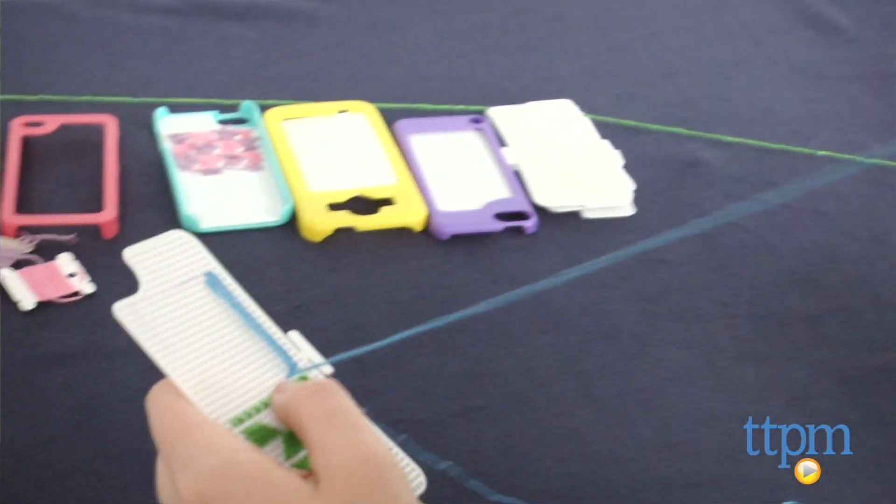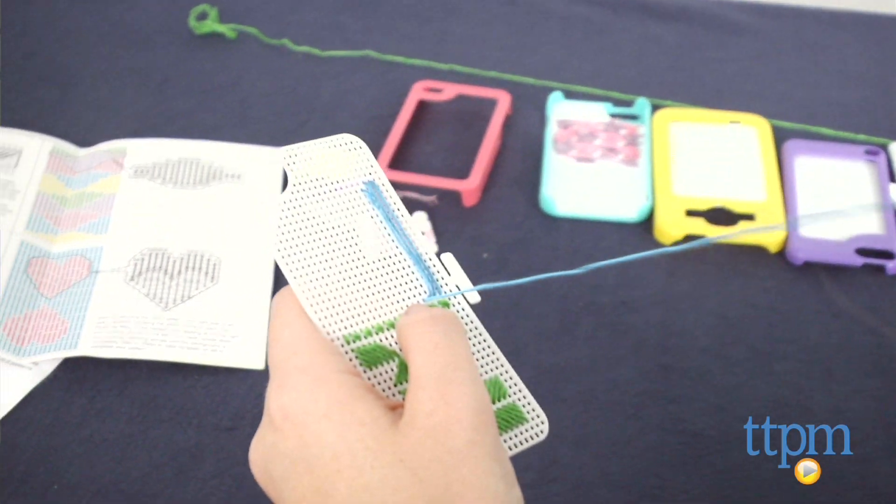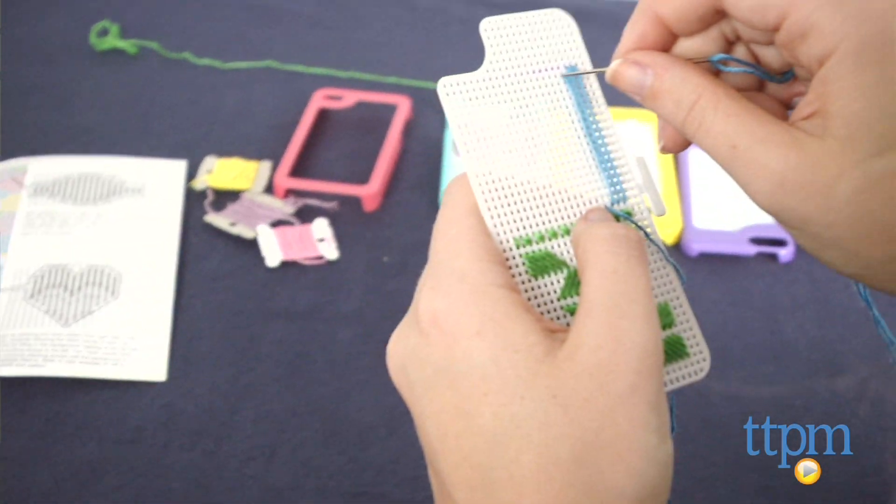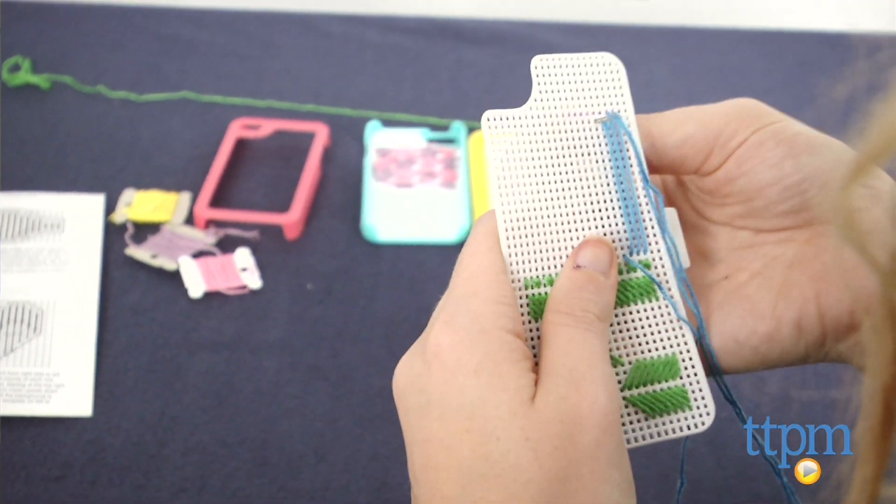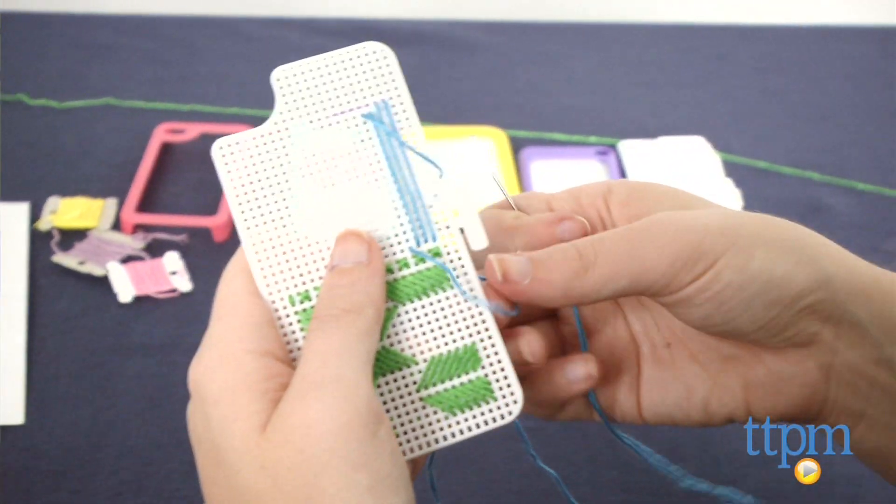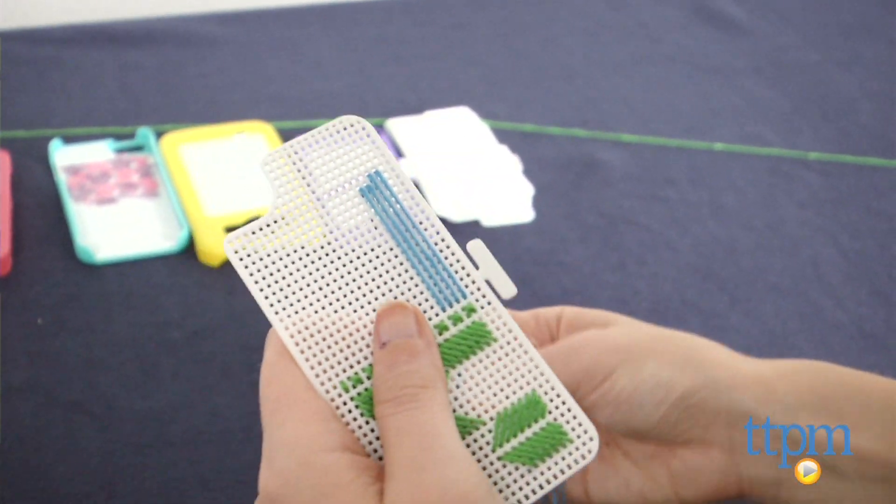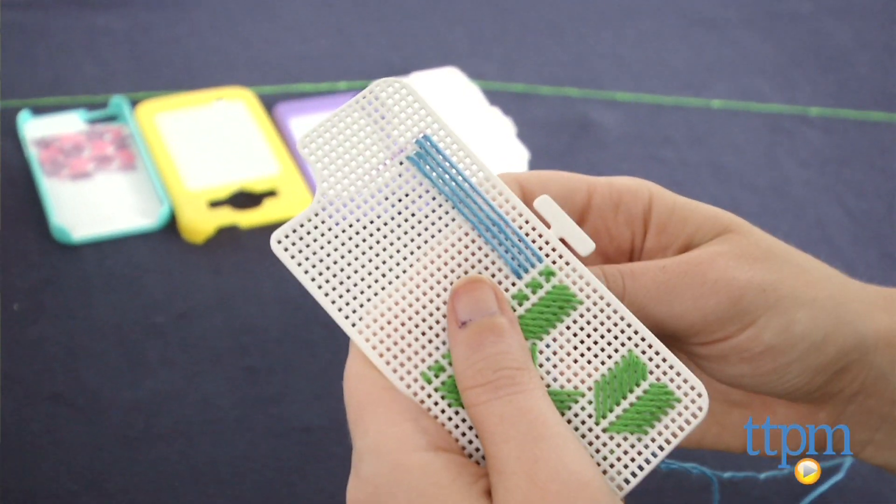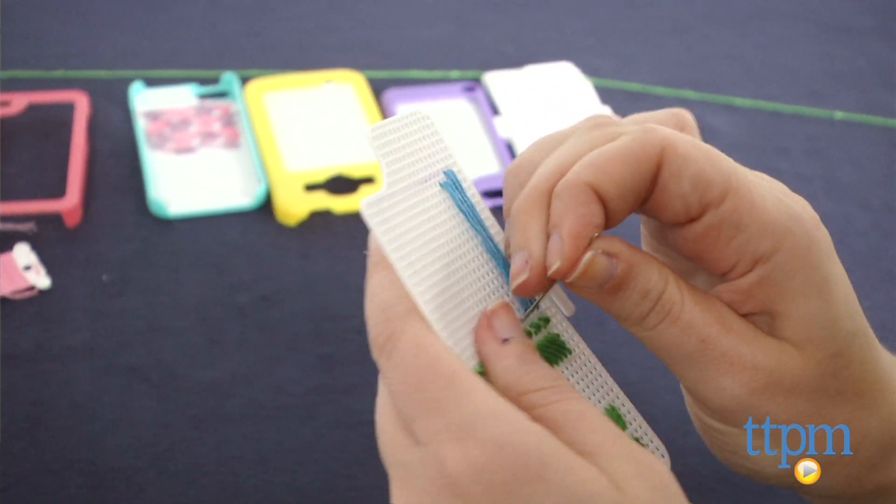Design times will vary on the pattern you choose, but overall we found the activity to be fairly straightforward as long as you follow the instructions. We like the customized touch it allows kids to give their devices and that they can also move beyond the included patterns to create their own designs as well. The only issue we really have is, as with others in this set, we found the cases to be fairly flimsy.